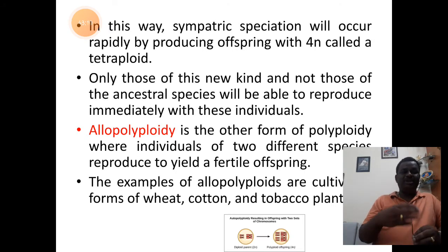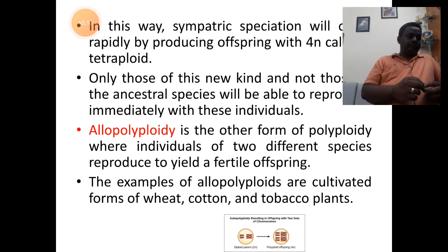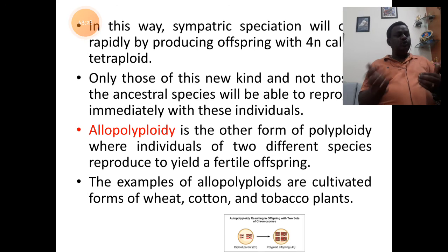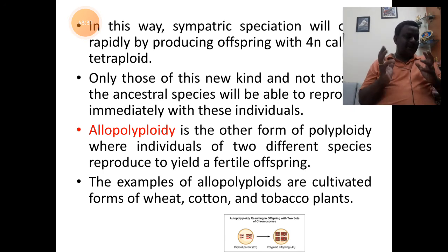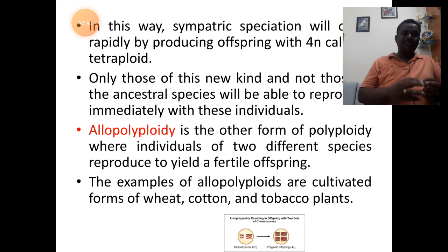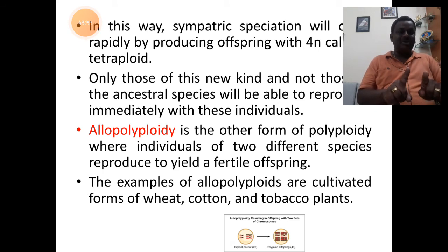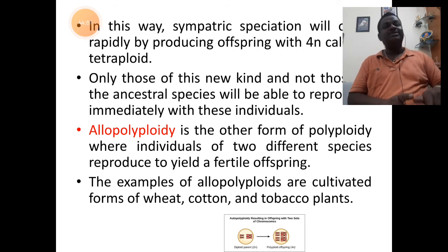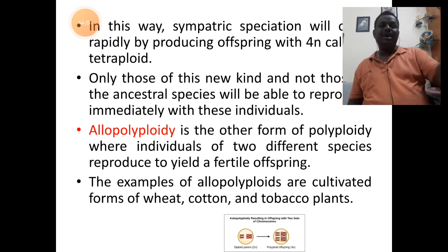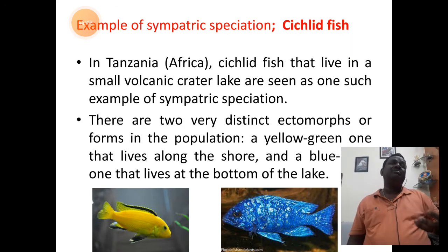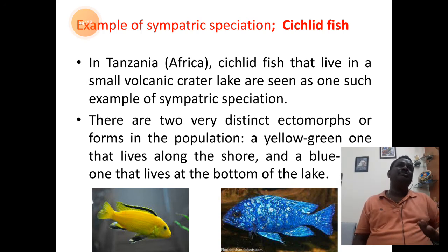The second type of sympatric speciation process is allopolyploidy. In allopolyploidy, the chromosomal sets of two different organisms involved in sexual mating get multiplied. Allopolyploid cultivable agricultural crops include wheat, cotton, and tobacco plants. When two parents are involved in sexual reproduction, both parents show polyploidy in their gametes. When such polyploid gametes enter fertilization, we get an allopolyploid resultant embryo. This is how allopolyploidy is used in the development of a variety of crops.